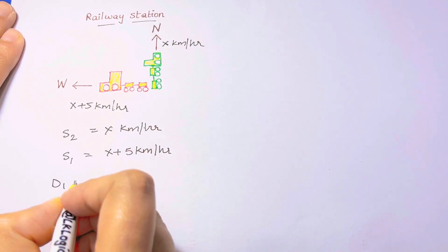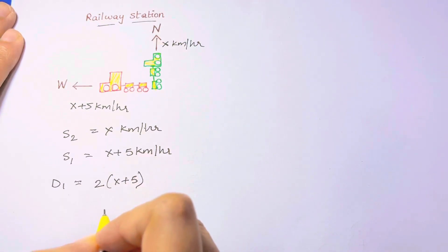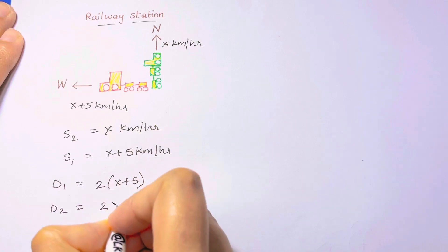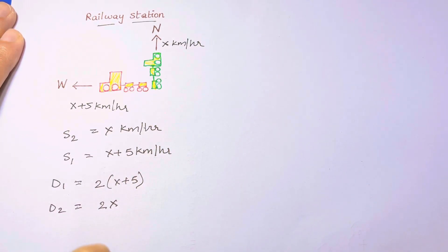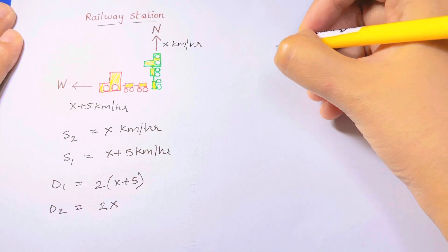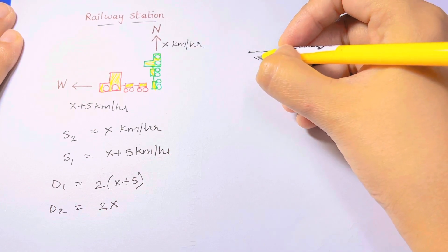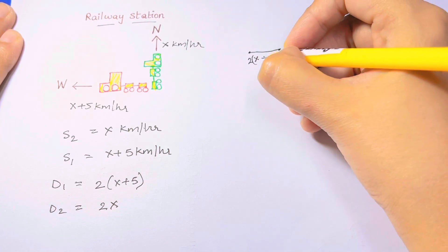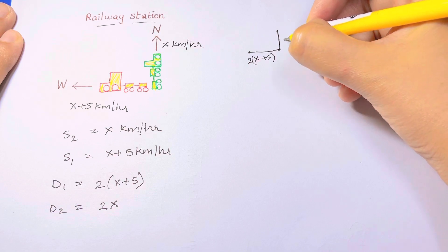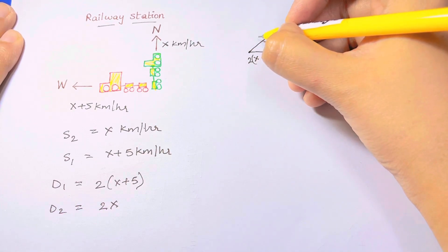The distance traveled by the first train in two hours is two multiplied by x plus five kilometers, and the distance traveled by the second train is two times x kilometers. Train one reaches from here to here — that is 2(x+5) — and train two reaches from here to here — just 2x. The distance between them is 50 kilometers.